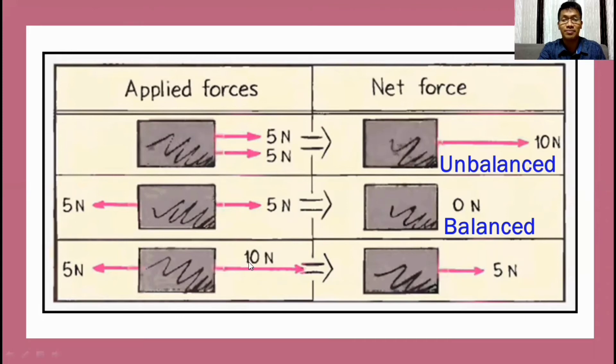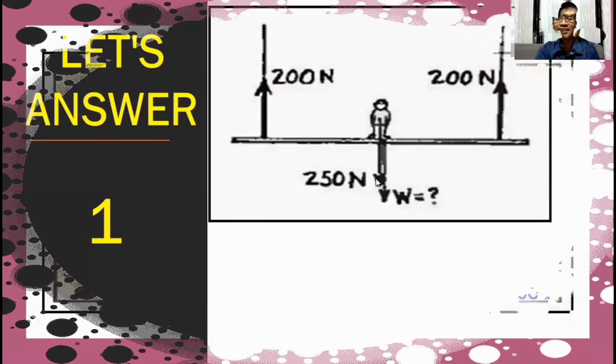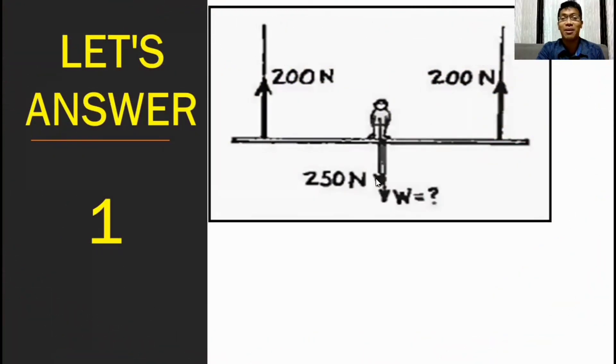We just subtract them, pulling the object to the left. So ten minus five, it's equal to five. Therefore, since there is an unequal distribution of force, the body will move. Would it move to the right or left? Based on this illustration, it will move on the right side. Why? Because more force is exerted on this side. And again, this is another example of unbalanced force. Let's apply the concepts of balance and unbalanced force in this scenario.